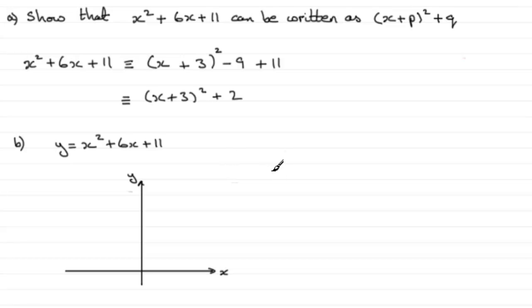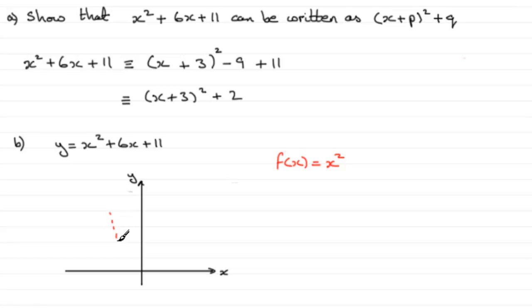What we do is we think of f of x, first of all, as being equal to x squared. The graph of f of x equaling x squared would be a parabola going through the origin, a u-shape. So there's my graph of f of x equals x squared.